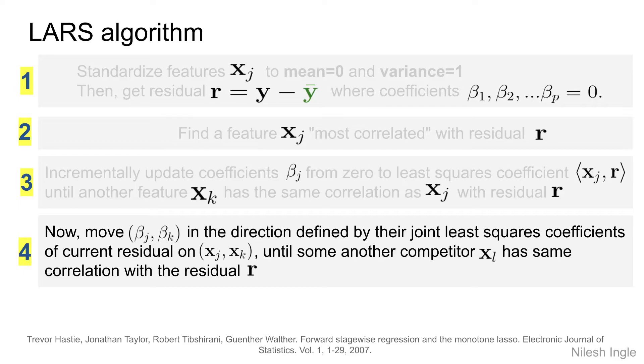Now, in step four, we calculate the beta j and beta k, and we move in the direction defined by the joint least squares coefficients on the current residuals for these features xj and xk. We continue along this direction until we find another feature xl that has the same correlation with the current residuals.